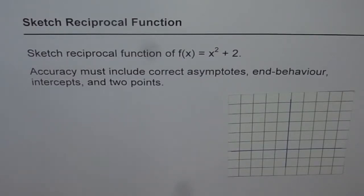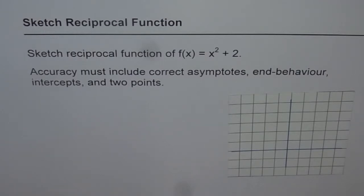Let us sketch the reciprocal of a quadratic function, and this one is kind of unique in itself. The question is: sketch the reciprocal function of f(x) = x² + 2. Accuracy must include correct asymptotes, end behavior, intercepts, and two points.